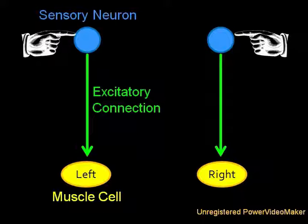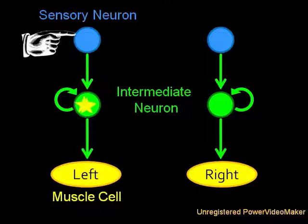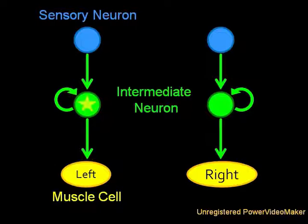Now let's add an intermediate neuron that also happens to synapse onto itself. Now, an input on either side not only causes that muscle to contract, but because the intermediate neuron continues to excite itself, the muscle remains contracted. Hence the circuit remembers the stimulus long after it's gone away.